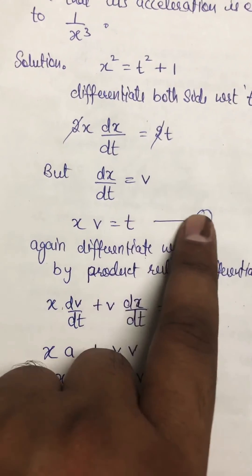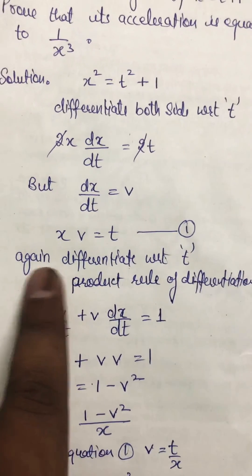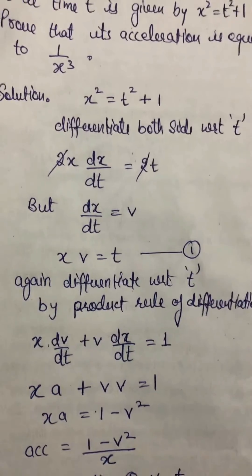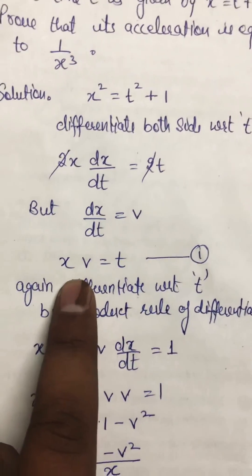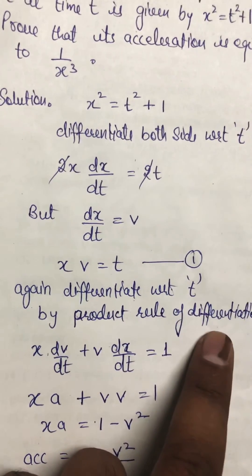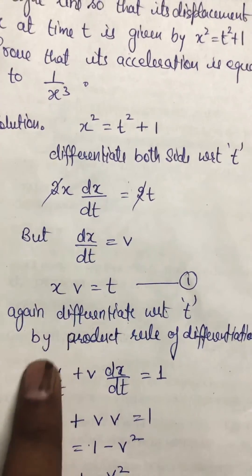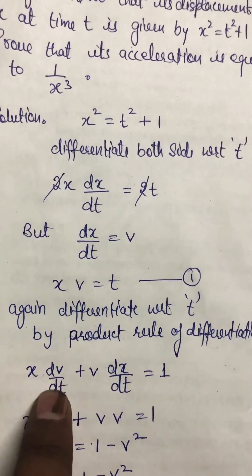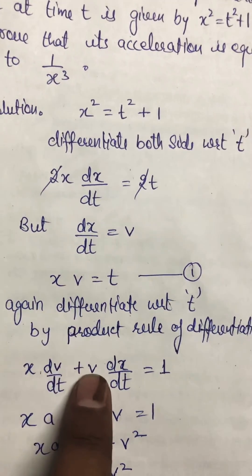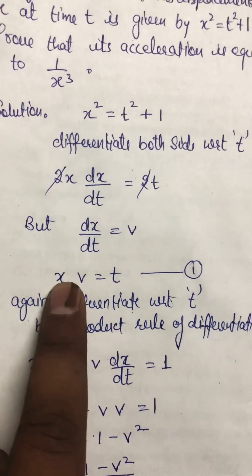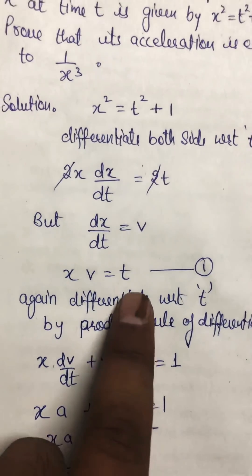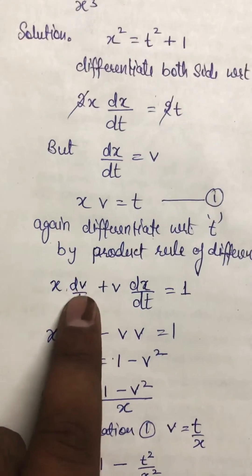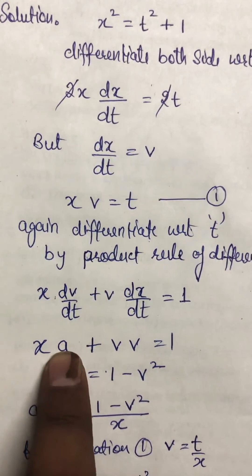We differentiate equation 1 again with respect to t. Since both x and v are variables, we apply the product rule: the first function as-is times the derivative of the second (dv/dt), plus the second function as-is times the derivative of the first (dx/dt). The differentiation of t with respect to t is 1.